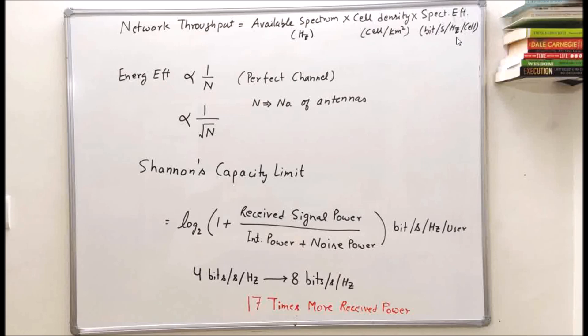Now let's look into network throughput. Network throughput depends upon available spectrum, cell density, and spectral efficiency. Spectral efficiency is given in bits per second per hertz. Smaller the cell, higher the network throughput. The reason for that is better utilization of frequency spectrum or frequency reuse is of higher order.